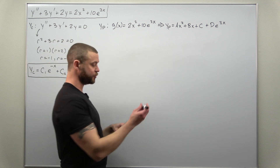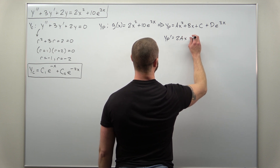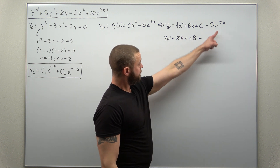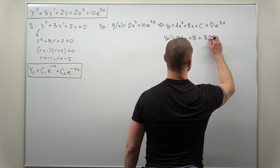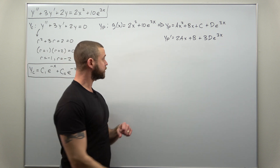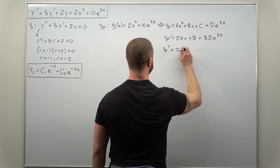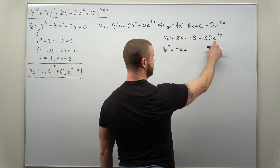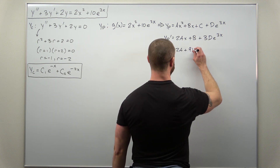Let's go ahead and crank out those derivatives. The first derivative looks like 2ax plus b. Be careful to use the chain rule differentiating your exponential function — you'll get a factor of three, so 3d times e to the 3x. Differentiating one more time to get yp double prime, we'll have 2a. The b is a constant that differentiates to zero, but the chain rule gives another factor of three, giving 9d times the exponential function.